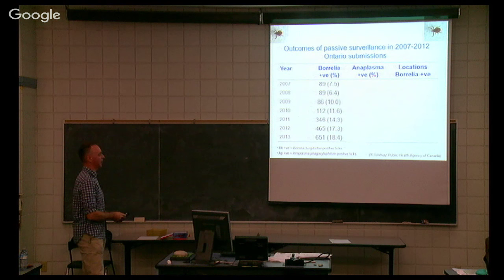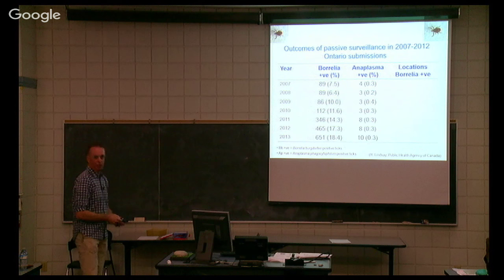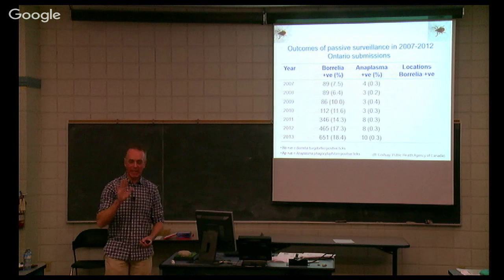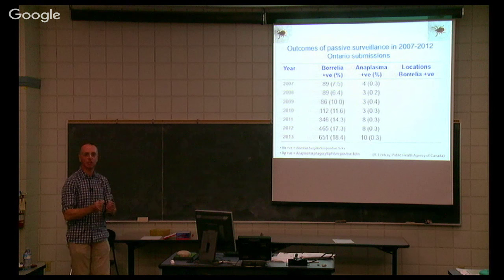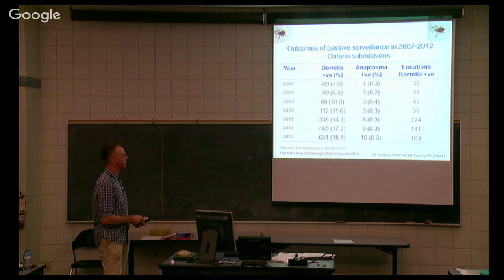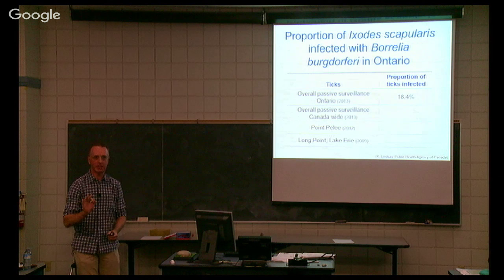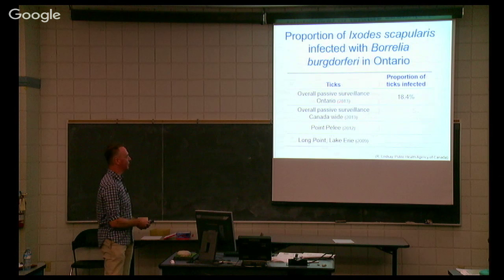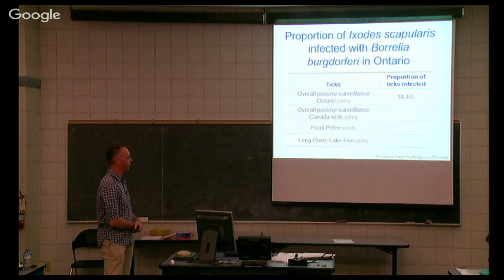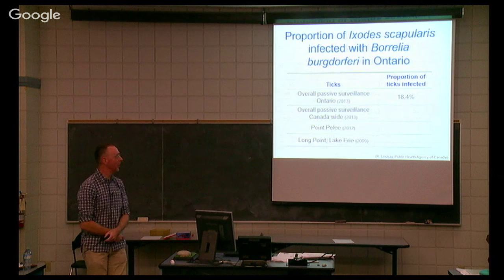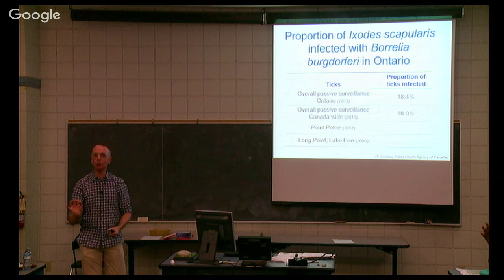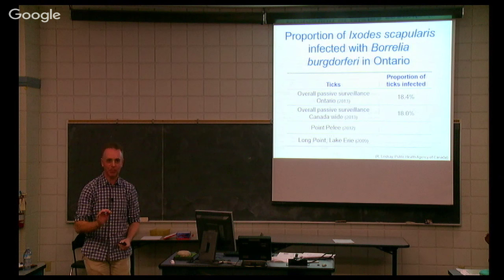The other pathogen public health is particularly concerned about is Anaplasma — the data for that is very low, always typically much less than the Borrelia burgdorferi data, and it hasn't been creeping up. The last column is the number of geographic locations, and that has been progressively increasing. The take-home message for the percentage of ticks positive for Borrelia burgdorferi: 18.4% positive for Ontario in 2013. In some of the original places where this tick first established, the prevalence is significantly higher — 27% at Point Pelee, and 60% at Long Point, Lake Erie in 2009.